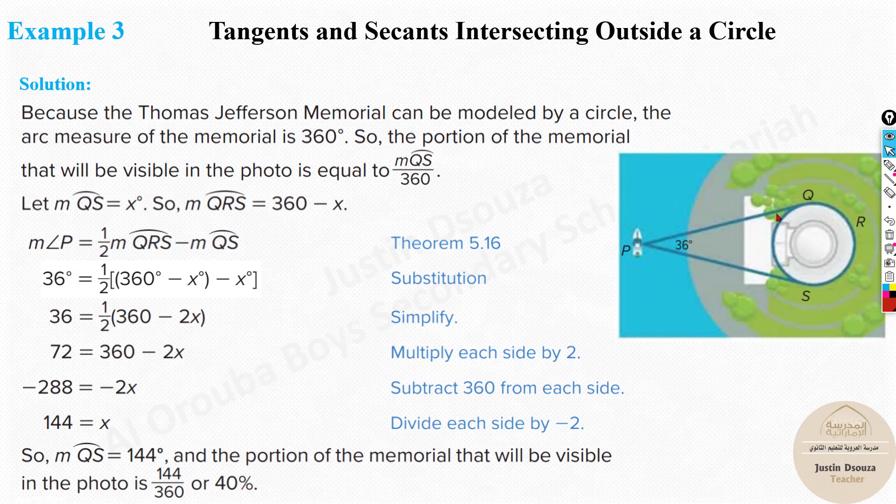That is how we solve it. So basically 144 degrees arc is what is visible to the photographer. In terms of percentage, it will be 144 by total, that is 360, 40%.